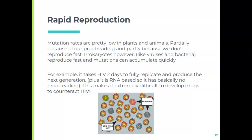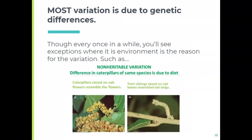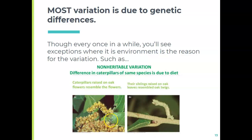There are also some environmental sources of variation. These two caterpillars are the exact same species with the exact same genetics, but one ate oak flowers and one ate oak leaves. The one raised around oak flowers camouflaged itself with oak flowers; the other looks like a little twig because it lived around leaves. This is very uncommon — most variation comes from genetics — but you can get it environmentally too.